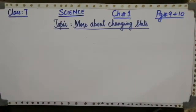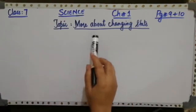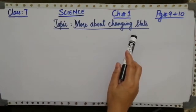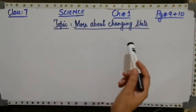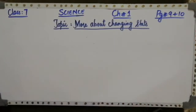The second and last topic of this chapter is 'More about Changing State.' This topic is related to the kinetic theory of molecules. We know that different substances exist in different states of matter. For example, water basically exists in all three states of matter.